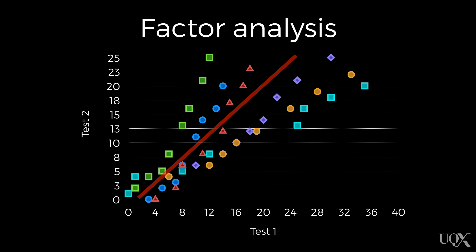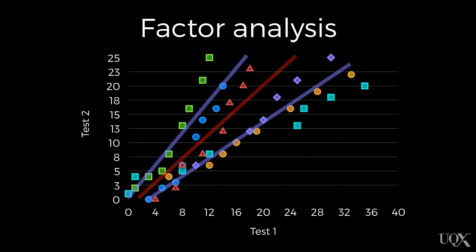What factor analysis does is it looks at whether one, two, or even three factors better describe the data — it goes up to any number it needs. How you know when it's adequately describing the data is the variation around those factors is reduced to a statistical minimum. There's an optimal number where adding more factors won't get rid of any more error. So we can statistically tell what number of factors we need to represent these scores. The idea is if we give people a bunch of intelligence tests and do factor analysis on their performance, we should be able to work out how many factors we need to describe it.